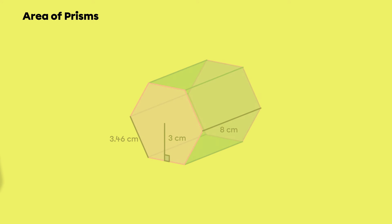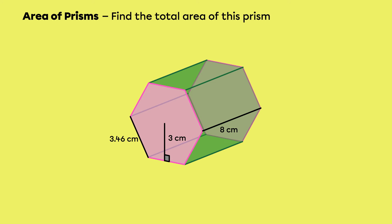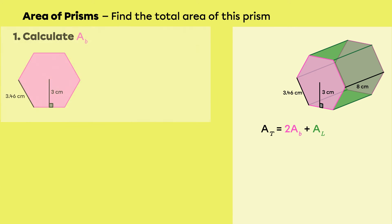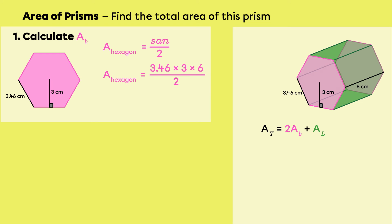Let's look at an example of calculating total area together using the previous formula. Here we are asked to find the total area of the following hexagonal prism. We know the total area of a prism is twice the area of a base plus the lateral area. We can start by calculating the area of a base. Here, the bases are hexagons. To find the area of a regular hexagon, we use the formula S times A times N divided by 2, where S represents the measurement of one side, A the measurement of the apothem, and N the number of sides. We replace the formula's variables by the values in the problem and perform the calculations. The area of one base is 31.14 centimeters squared.